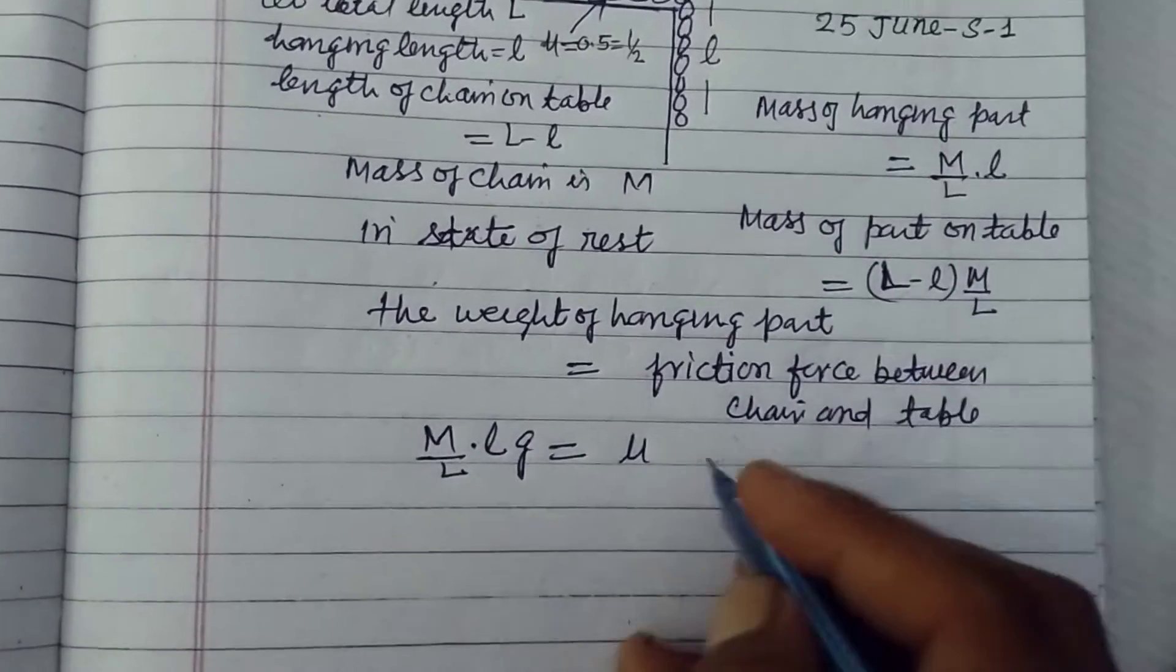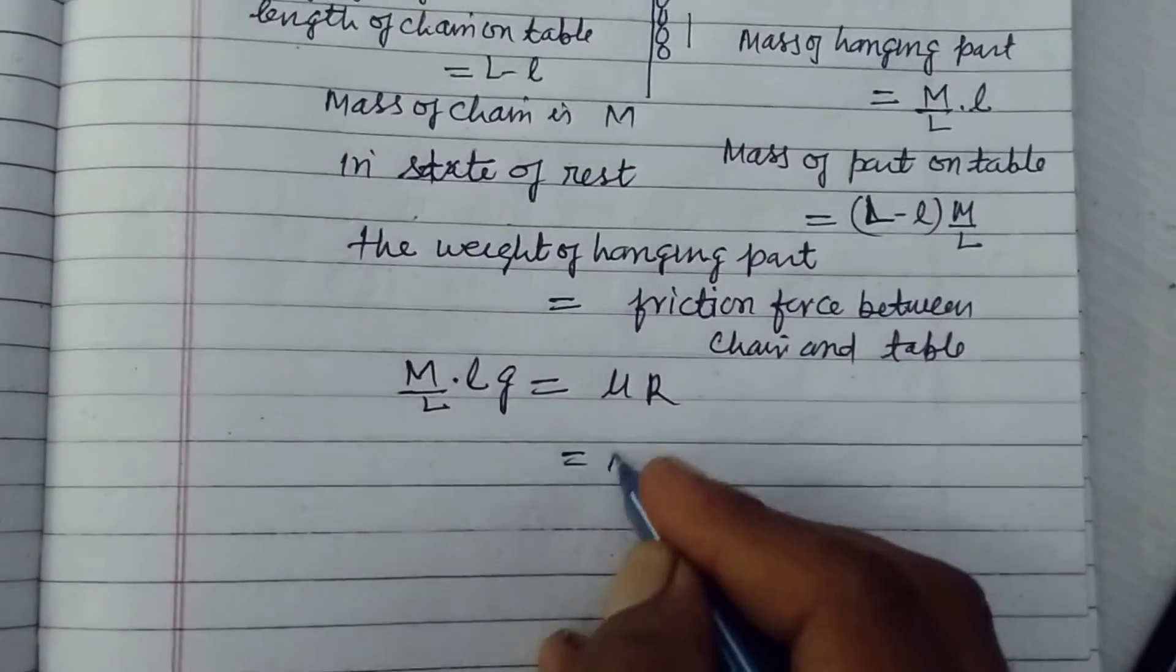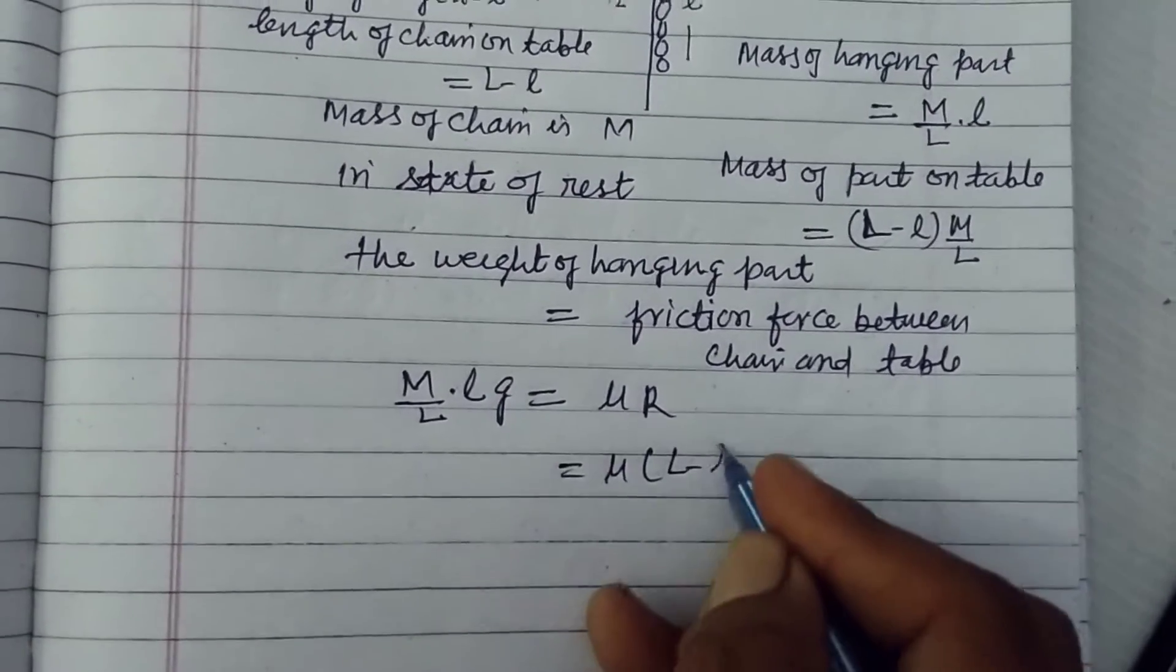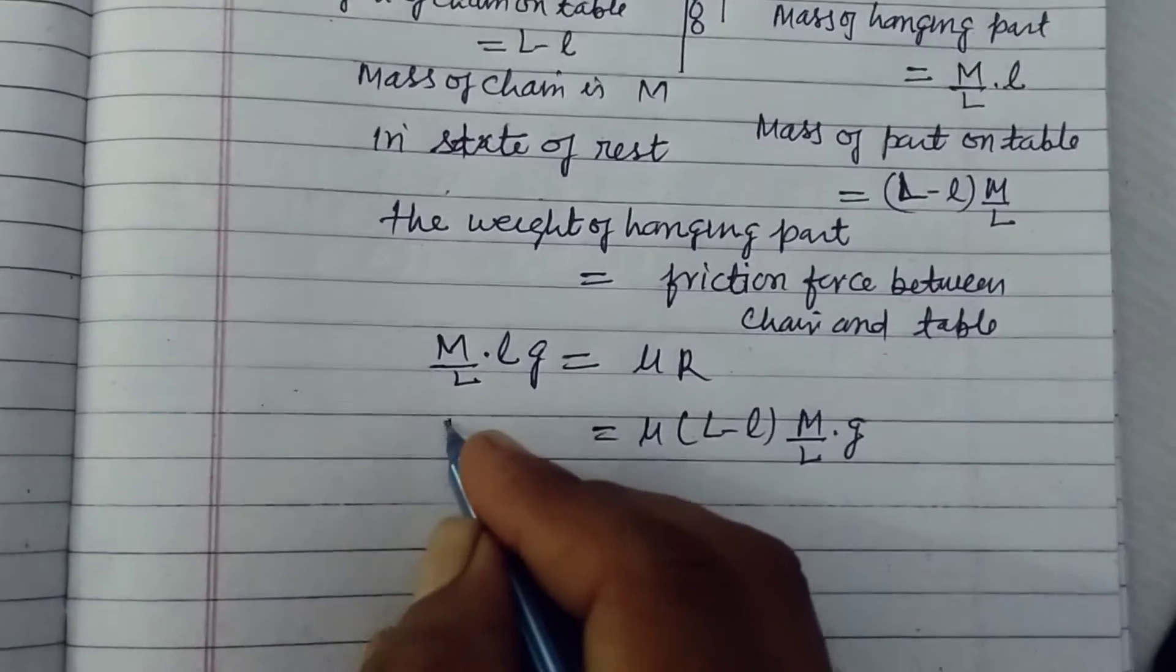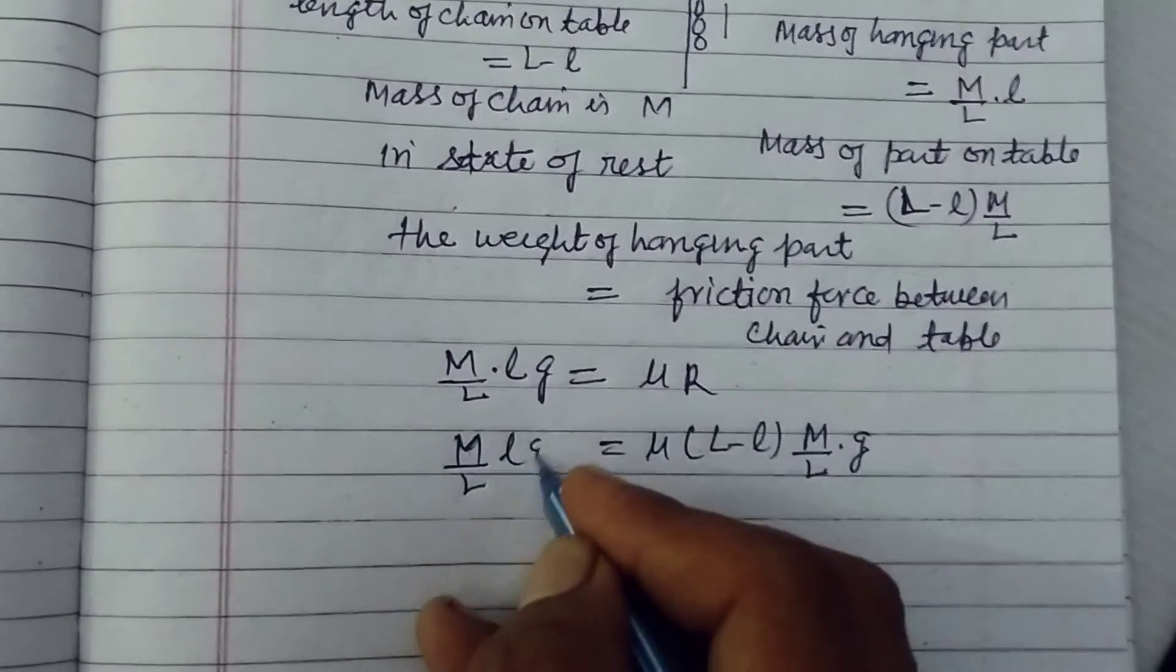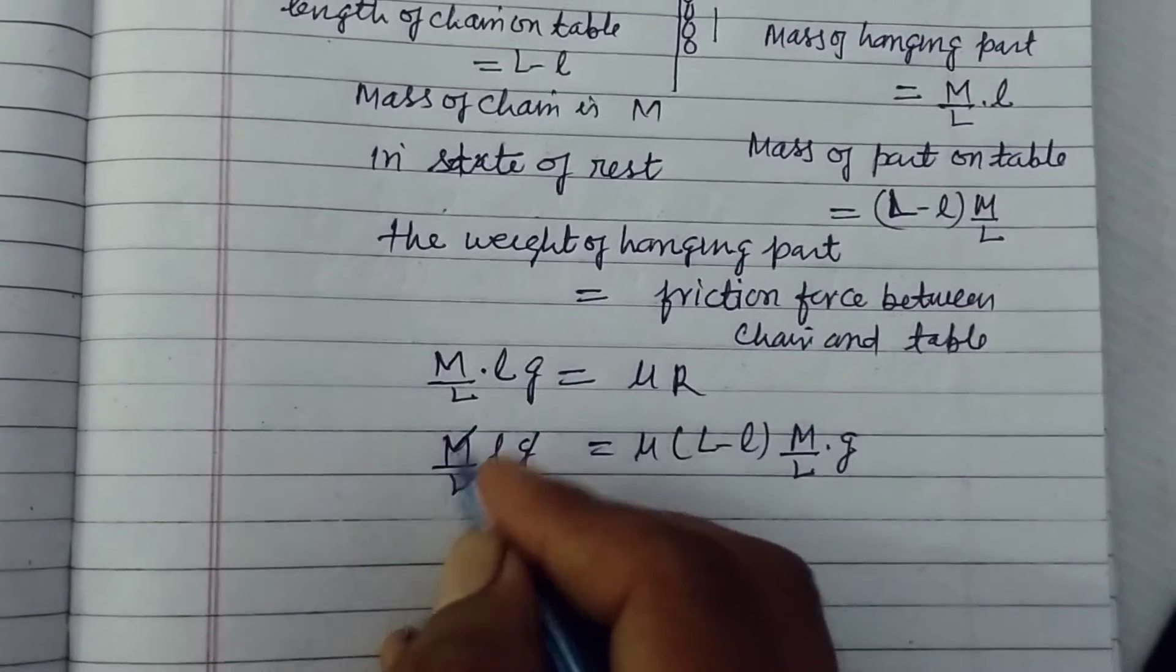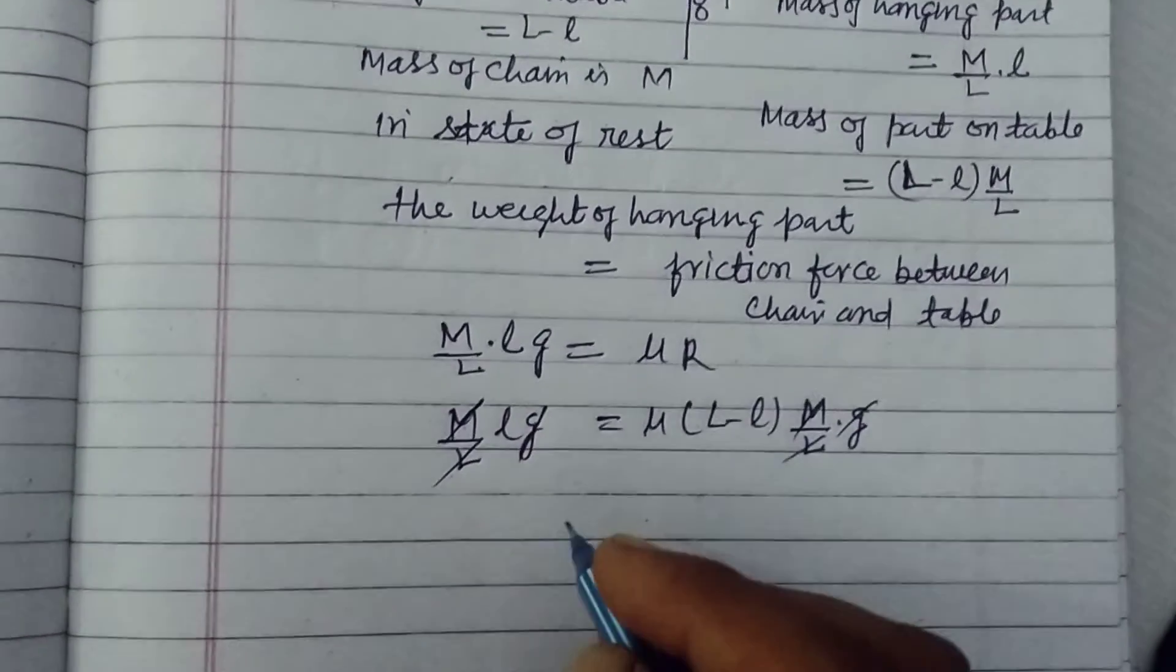R is L minus l into M upon L into G. So G, M upon L cancels both sides.